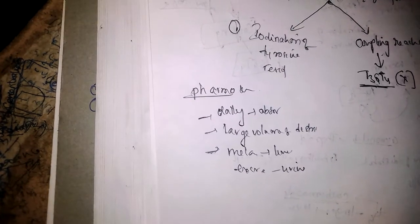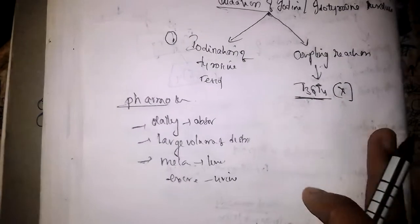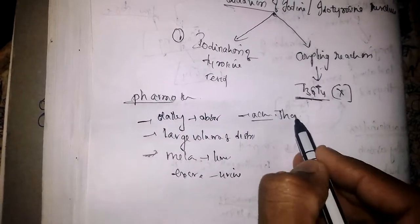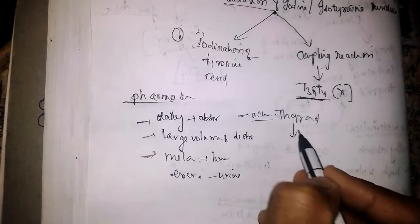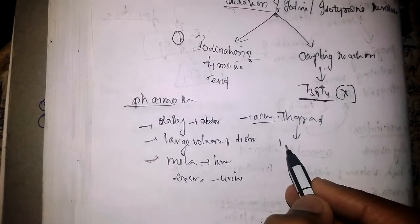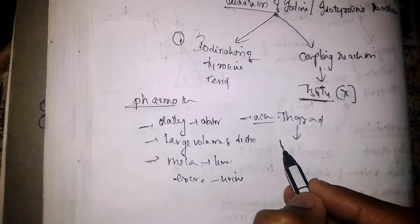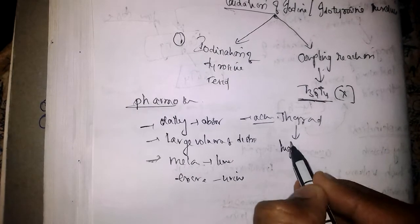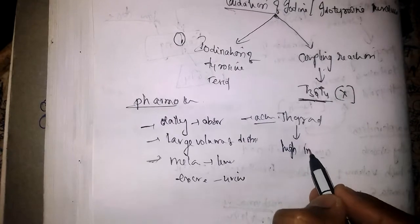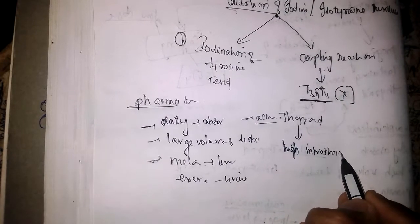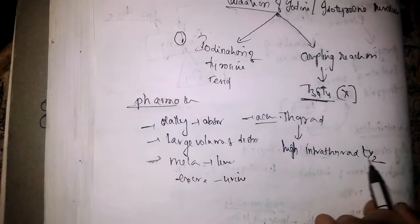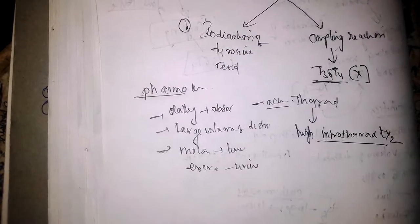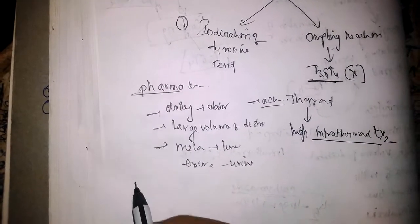All these drugs accumulate in thyroid tissue. Due to accumulation in thyroid tissue, they have a high intra-thyroid half-life. This is about pharmacokinetics.